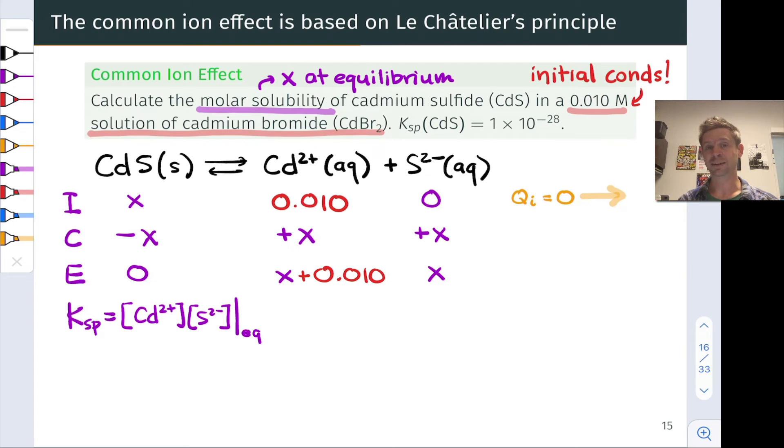This is the molar solubility of cadmium sulfide, CdS, in this solution of CdBr₂. All right, so when we do that, we get Ksp is equal to x plus 0.010. x plus 0.010, that's the cadmium 2+ concentration at equilibrium, times x.